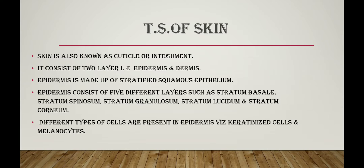Skin consists of two layers: epidermis and dermis. Epidermis is the superficial or outermost layer of the skin, while dermis is the innermost or inner layer. Epidermis is made up of stratified squamous epithelium and consists of five different layers: stratum basale, stratum spinosum, stratum granulosum, stratum lucidum, and stratum corneum.